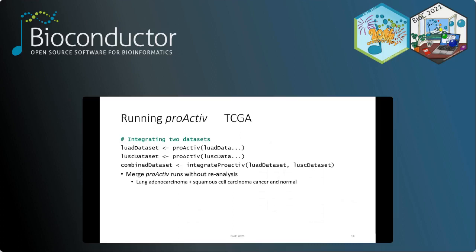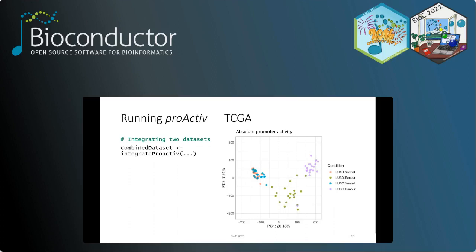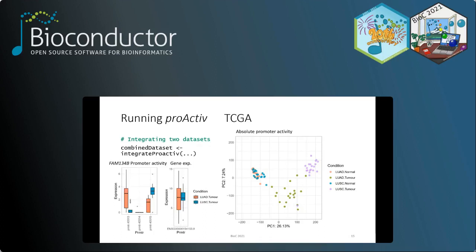ProActive also allows merging of multiple ProActive runs without reanalysis using the integrate_proactive function, which renormalizes promoter counts and activity. For example, we integrated lung adenocarcinoma and lung squamous cell carcinoma runs together. The PCA of the integrated dataset shows lung normal samples clustering together, while the two different lung cancer types have distinct promoter activity profiles. FAM134B, an esophageal squamous cell carcinoma marker, exhibits alternative promoter usage between the two lung cancer types.